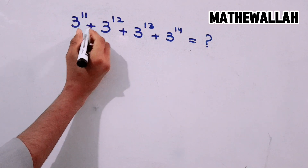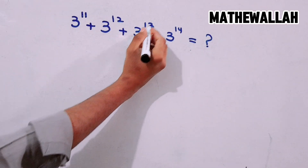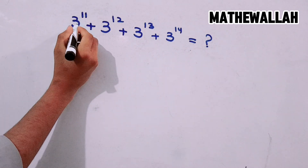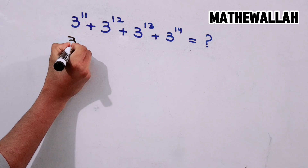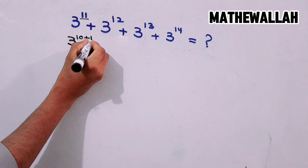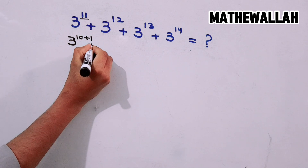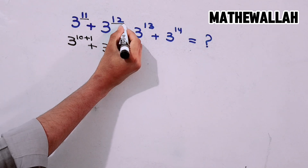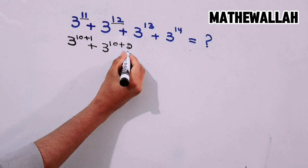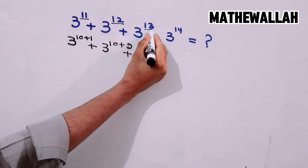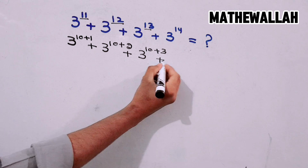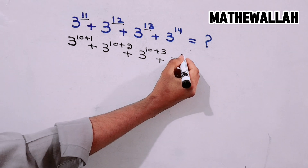We have to solve 3 power 11 plus 3 power 12 plus 3 power 13 plus 3 power 14. First, we rewrite each exponent: 11 is 10 plus 1, 12 is 10 plus 2, 13 is 10 plus 3, and 14 is 10 plus 4.